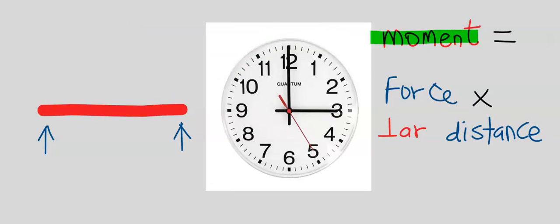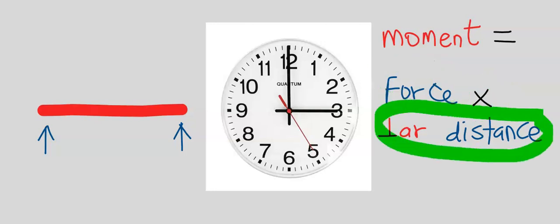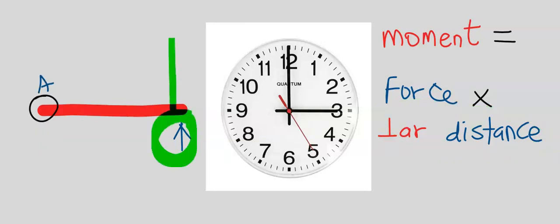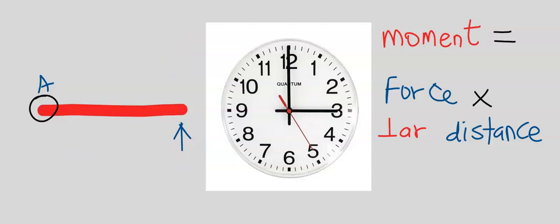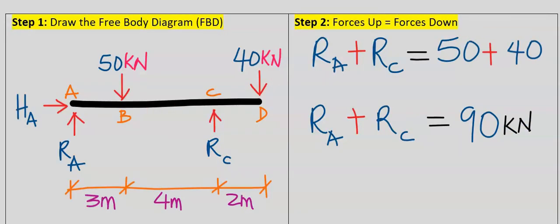Moment is defined as a force multiplied by the perpendicular distance — not just distance. The force must be acting perpendicular to the distance from the point where you are taking the moment. We are going to be applying this concept to the free body diagram.